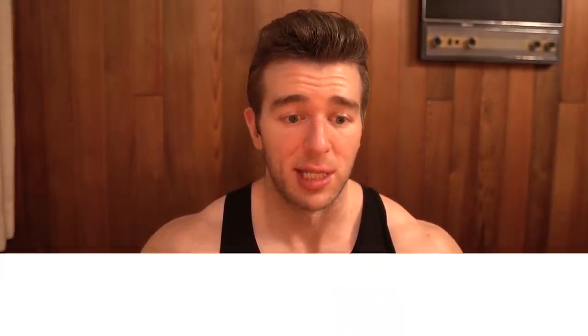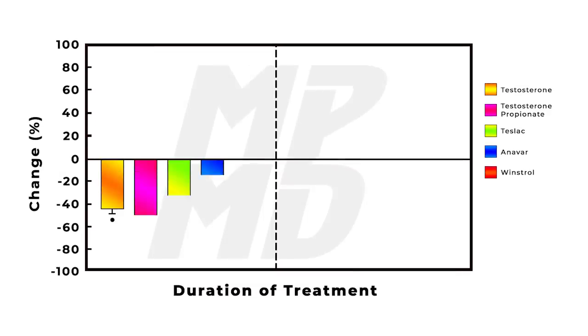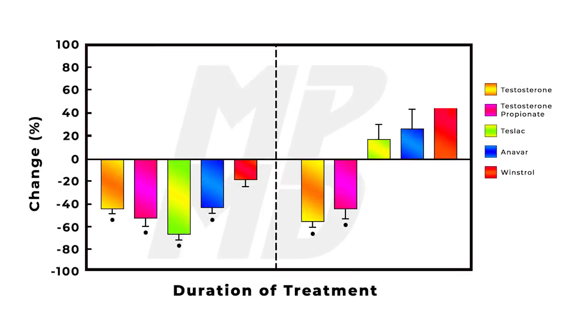The results showed significant immunosuppression was observed with all groups. However, by day 10, the Teslac, Anavar, and Winstrol treated groups showed immunostimulation and actually exceeded baseline immunity, while the testosterone treated groups maintained immunosuppression. As you can see in the graph, this is the effect testosterone, testosterone propionate, Teslac, Anavar, and Winstrol had on the immune system in this rodent model.